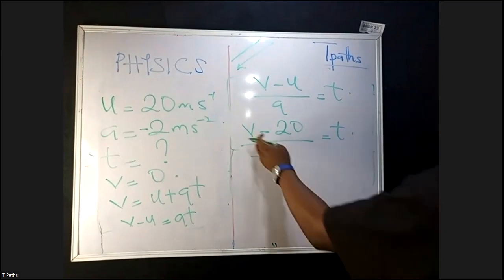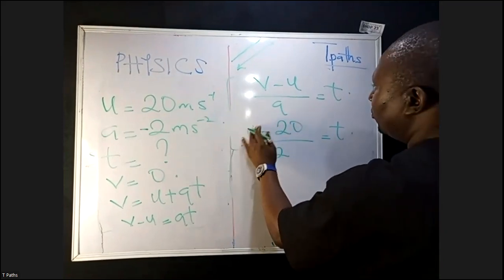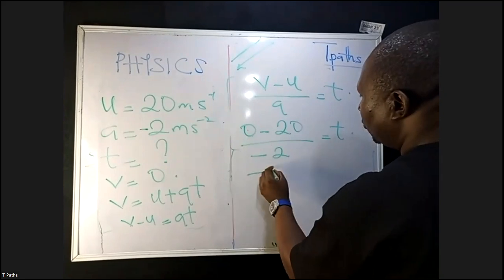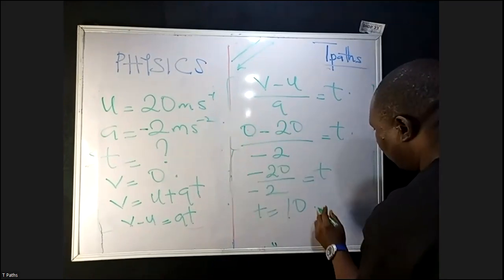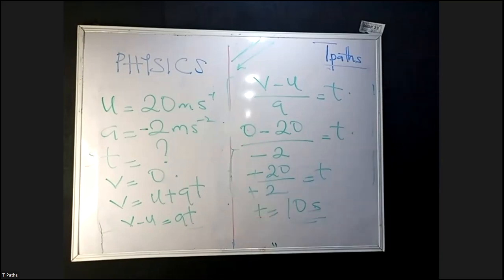V minus U over A: V is zero, so we have (0 − 20) / (−2) = T. Our T will be 10 seconds, because minus divided by minus gives a positive value.